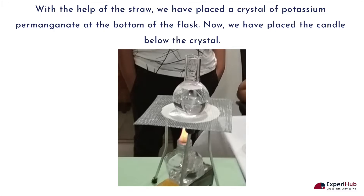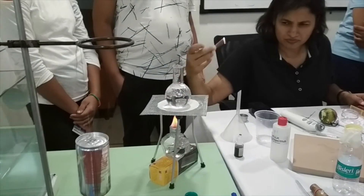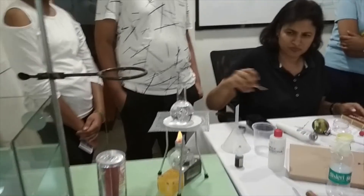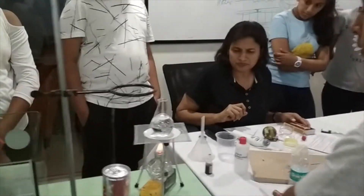With the help of the straw, we have placed a crystal of potassium permanganate at the bottom of the flask. Now we have placed the candle below the crystal. Just observe what will happen.